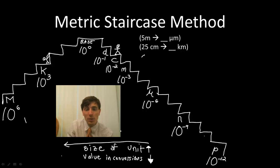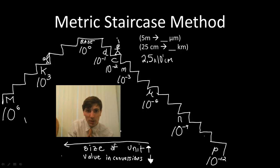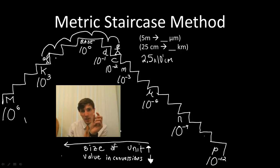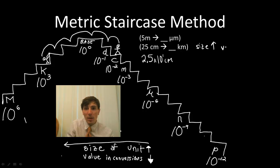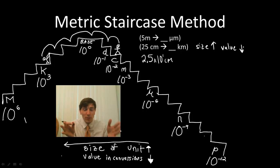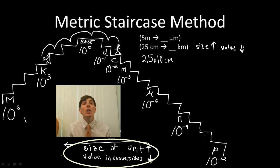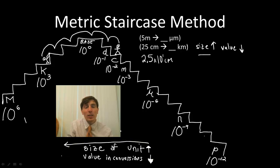Let's do the 25 centimeters. I'd first write this in scientific notation — whenever you're doing these conversions it will make things a lot easier. So this is 2.5 times 10 to the 1 centimeters. I'd like to convert this to kilometers. I'm over here in centimeters and I need to go to a much larger unit — a kilometer. I have these little 25 centimeters measured out and I want to express them in terms of kilometers. Kilometers are huge, so the size of my unit is going up, which means my value has to go down.